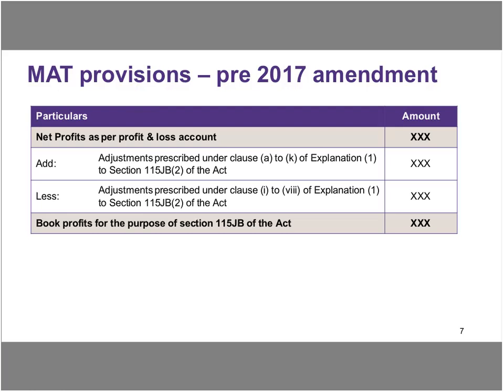On slide 7, we have a very brief description of what the MAT provisions today look like. When you do a MAT computation, you start with your net profit from the profit and loss account. You add items and adjustments described under clause A to K of Explanation 1 to Section 115JB(2) of the Act, and you reduce adjustments prescribed under clauses I to 8 of Explanation 1 to Section 115JB of the Act, and then you arrive at your book profits.